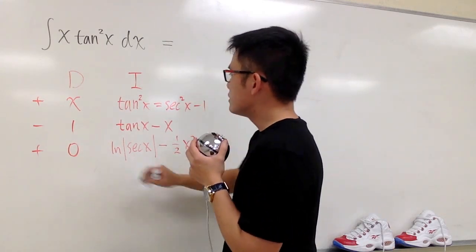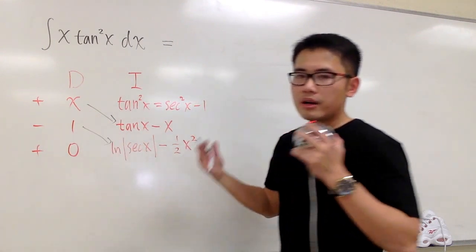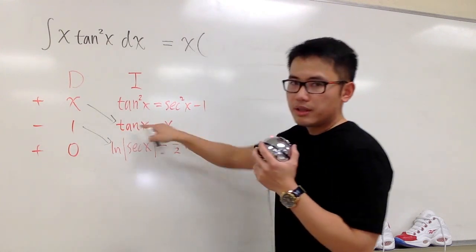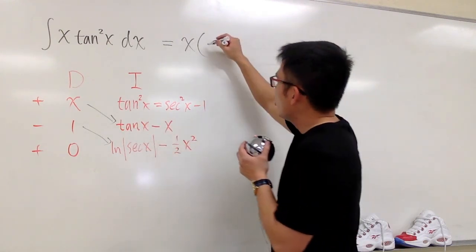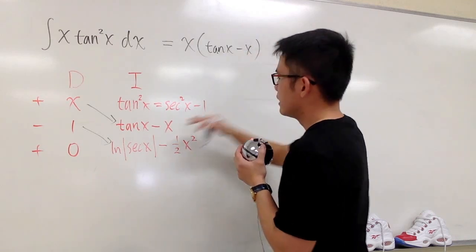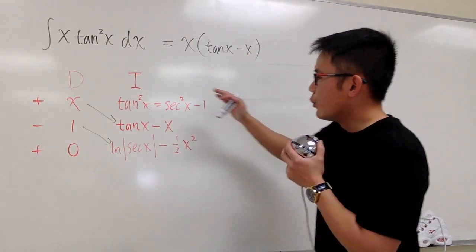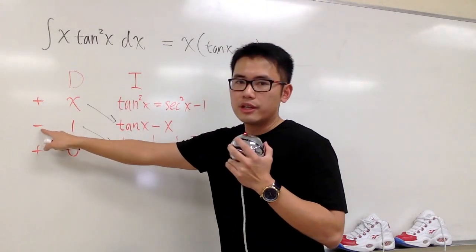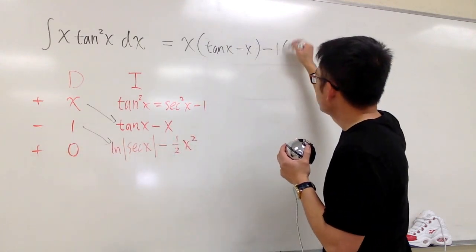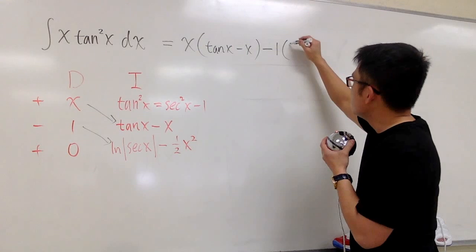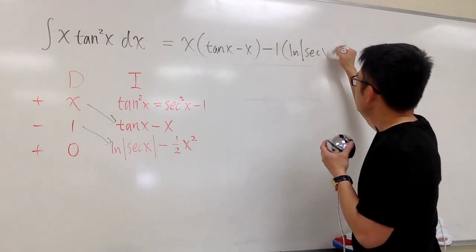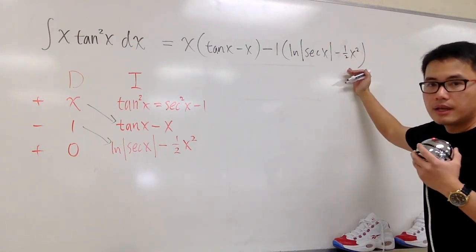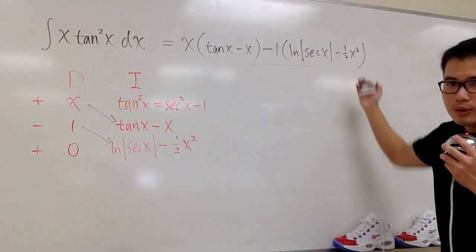Okay, here is the answer. The product of the diagonals are the answers. First one, we have x times that. So I'll put down x, open the parentheses, because this we have two things, tangent x minus x, like that. And then we will have minus 1 times this. So make sure you have this sign right here as well. Minus 1, so I'll put down the minus 1 multiplying with all that, which is the ln absolute value secant x, and then minus 1 half x squared, like this. And we're pretty much done with the integration part.